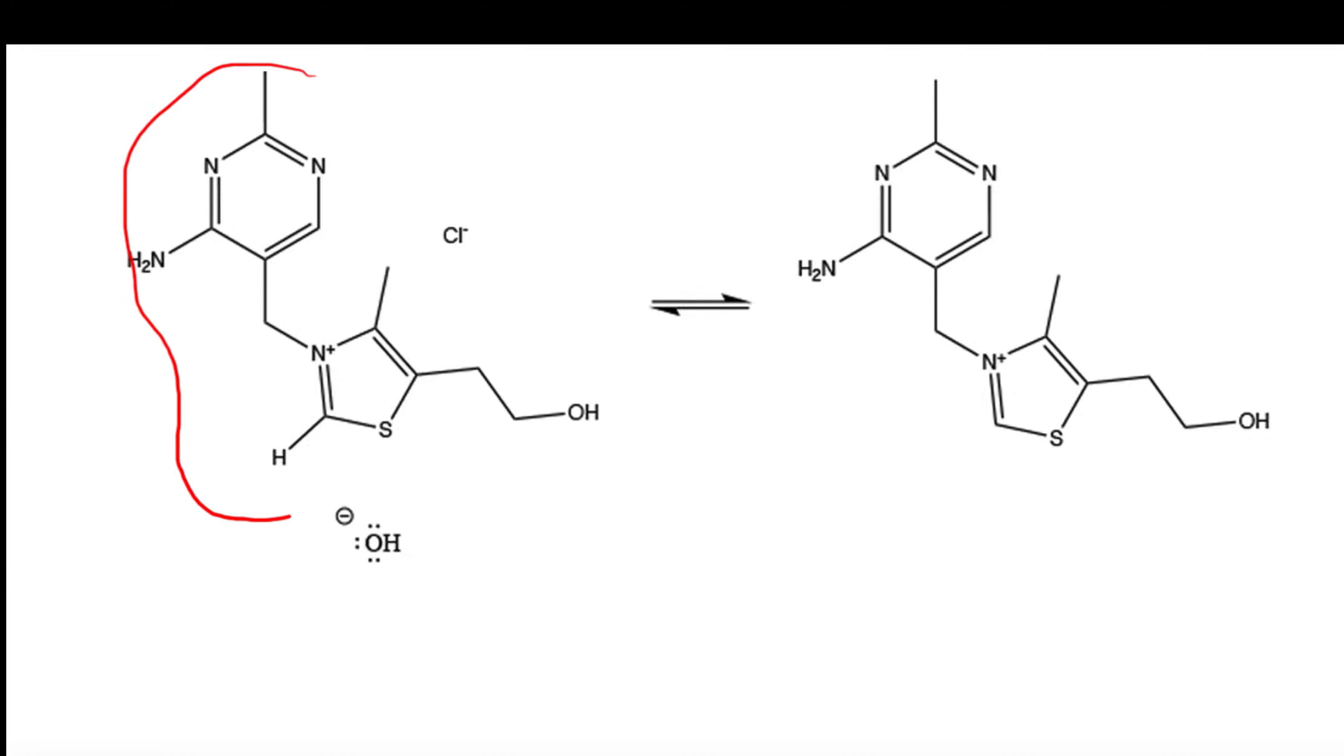This is the molecule of thiamine hydrochloride, and we're going to react it with a hydroxide anion. The hydroxide's lone pair grabs this proton, breaks the bond, and the lone pairs go onto this carbon.